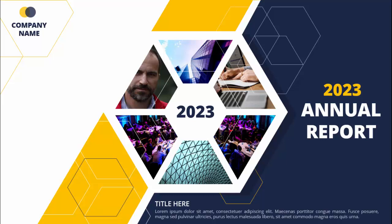In today's tutorial I'm going to show you how to create an annual report cover slide in PowerPoint. Here I have created a hexagon shape where I've added different images, and I've given an orange and dark blue color combination. On the top left you can add the company name and logo, and below you can add some title and detail text.